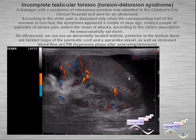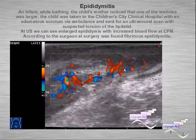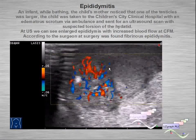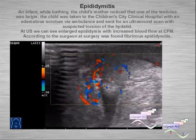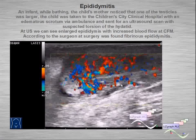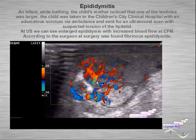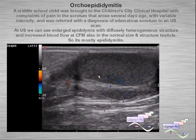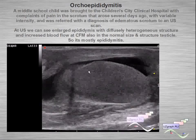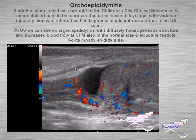An example of epididymitis: an infant with enlarged epididymis and increased blood flow in color flow mode. Another example of orchido-epididymitis with a mostly enlarged and heterogeneous epididymis, with increased blood flow in the epididymis and testicle.